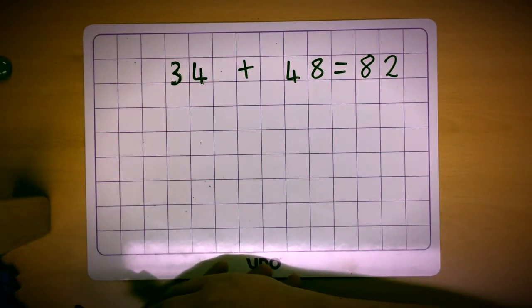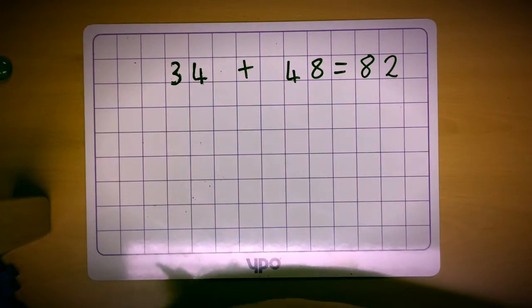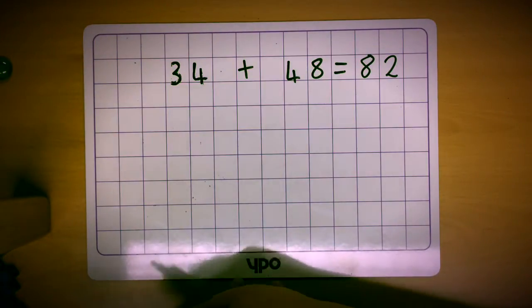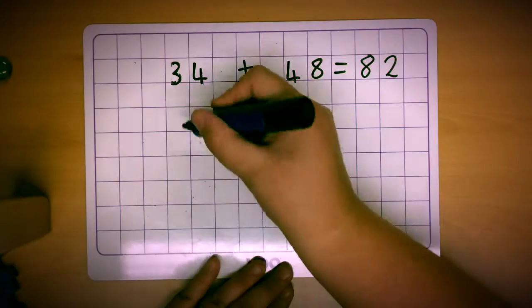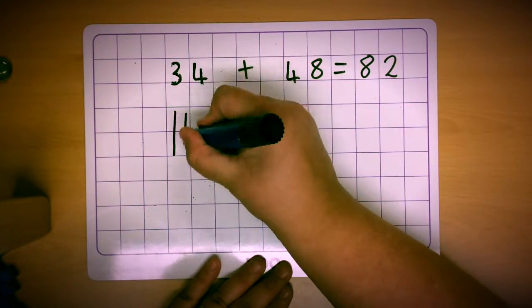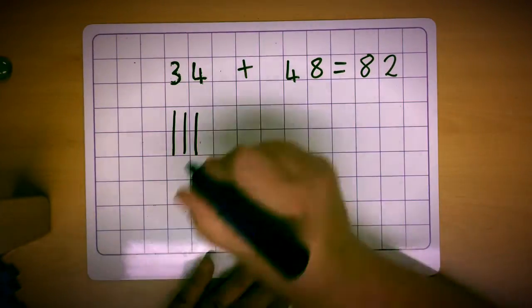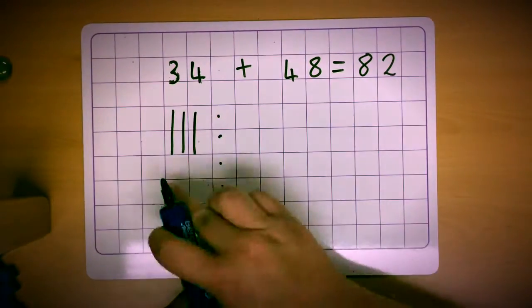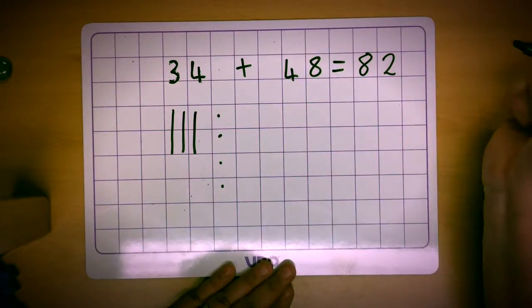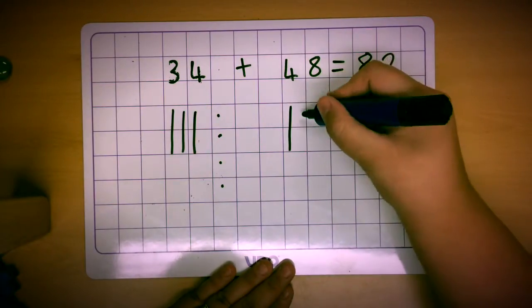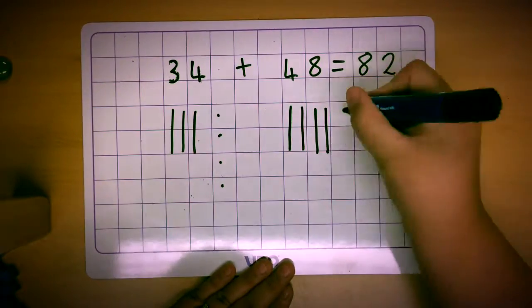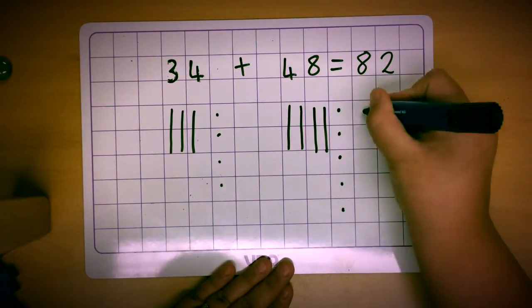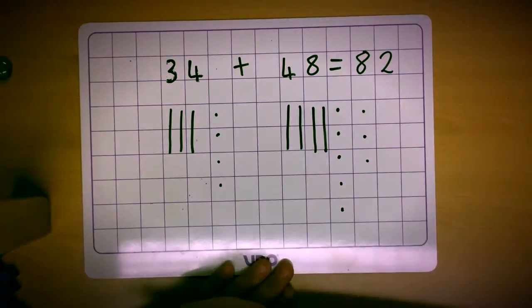We begin by drawing the numbers. We do long sticks to represent the ten sticks and little circle dots to represent the cubes. So to draw out this number we would have 10, 20, 30 and four little dots for the four cubes for 34. On this side we would have the four ten sticks, 10, 20, 30, 40, and 8, 1, 2, 3, 4, 5, 6, 7, 8 little dots.